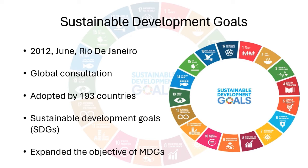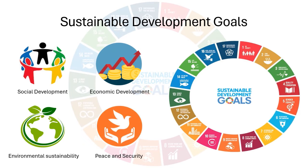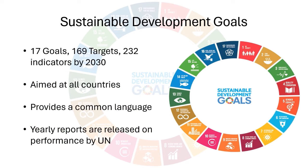You can call it MDG 2.0 or MDG Reborn. SDGs expanded the basic objective of the MDGs and include four goal dimensions: inclusive social development, inclusive economic development, environmental sustainability, and peace and security. With 17 goals, 169 targets, and 232 indicators to be achieved by 2030, SDGs have broader scope, perspective, and inclusivity.